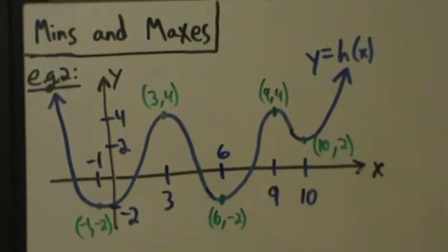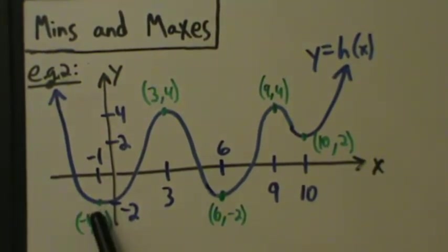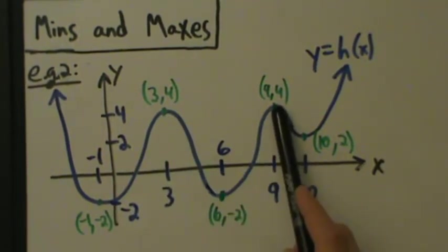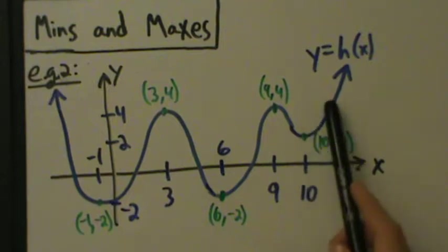So here, this is a local min, right, local min, local max, local min, local max, local min. But what do we notice here?